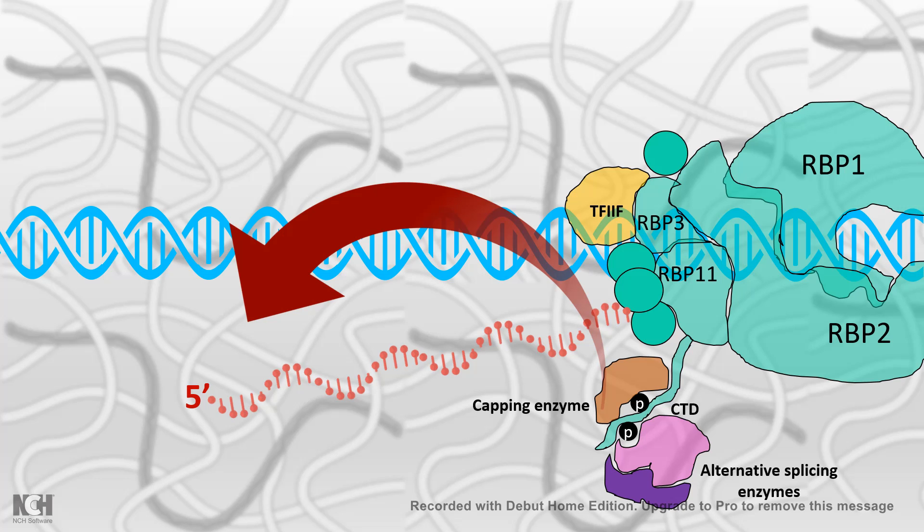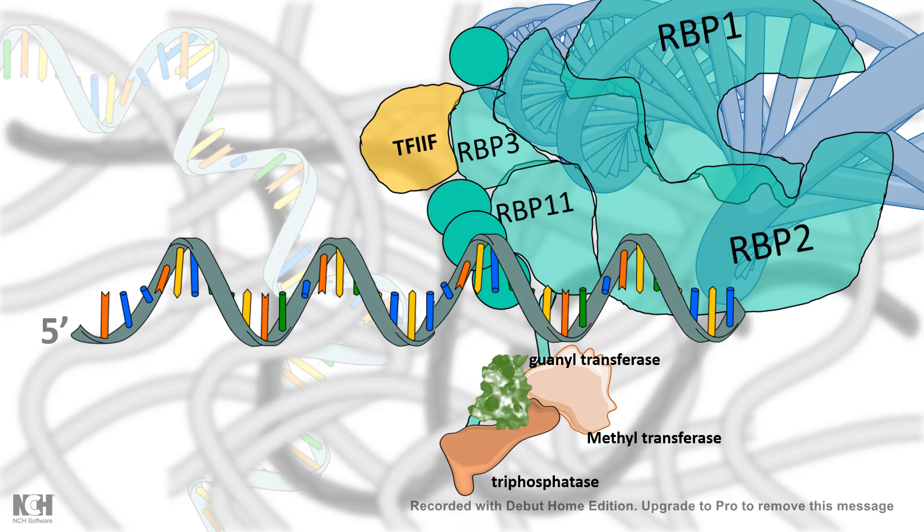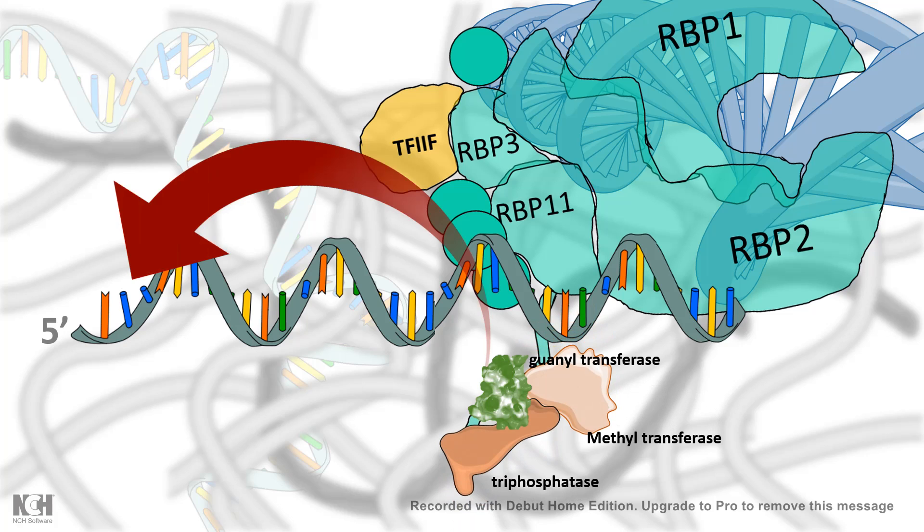The capping enzyme is a complex of three different enzymes: the methyltransferase, the triphosphatase, and the guaniltransferase. All these enzymes are important to make the 5' cap. We'll look at the process of capping in a step-by-step manner.